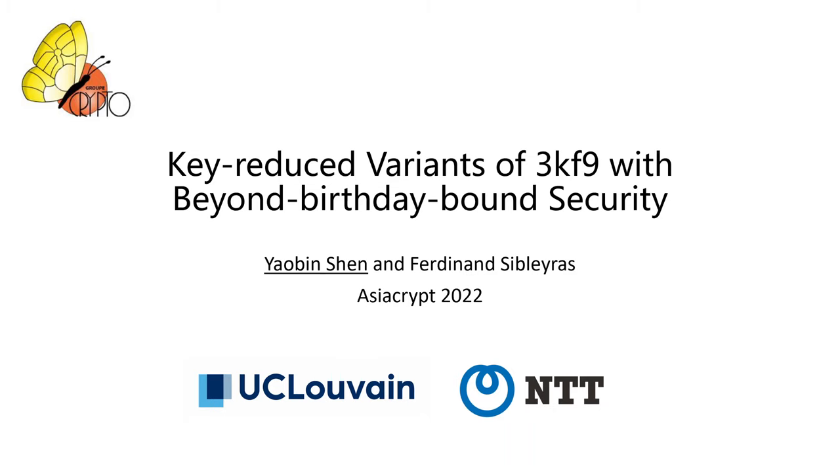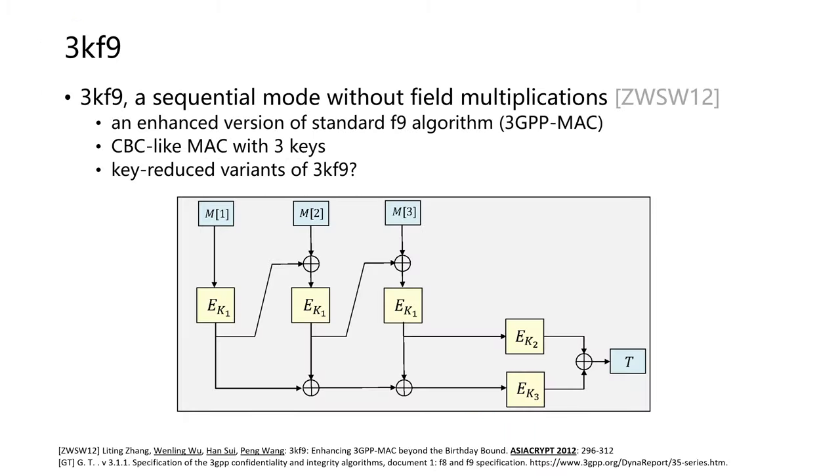This is joint work with Ferdinand Sibleyras. 3kf9 is a three-key CBC-type MAC that enhances the standardized integrity algorithm F9, also called 3GPP-MAC. It is a sequential mode without field multiplication and has beyond-birthday-bound security, expected to be a candidate in constrained environments, for instance with lightweight block ciphers.